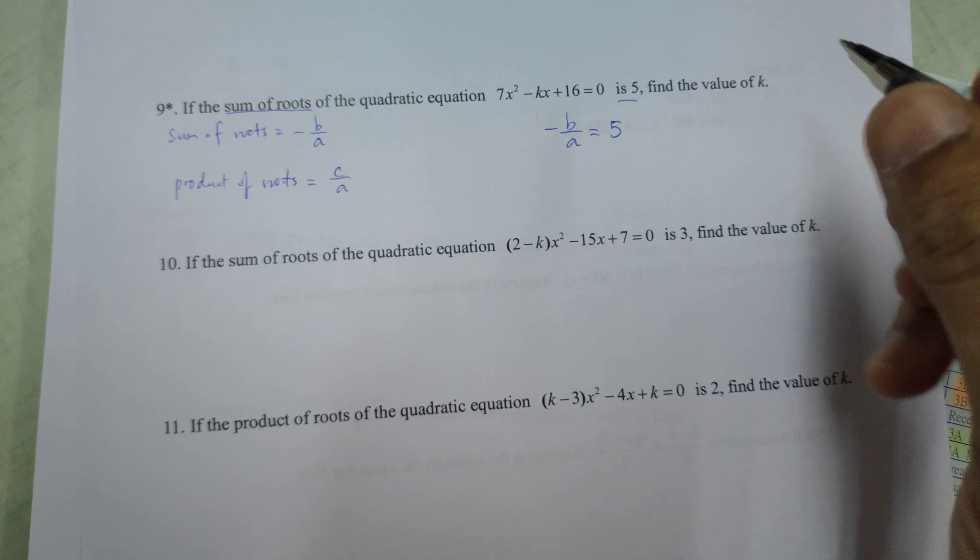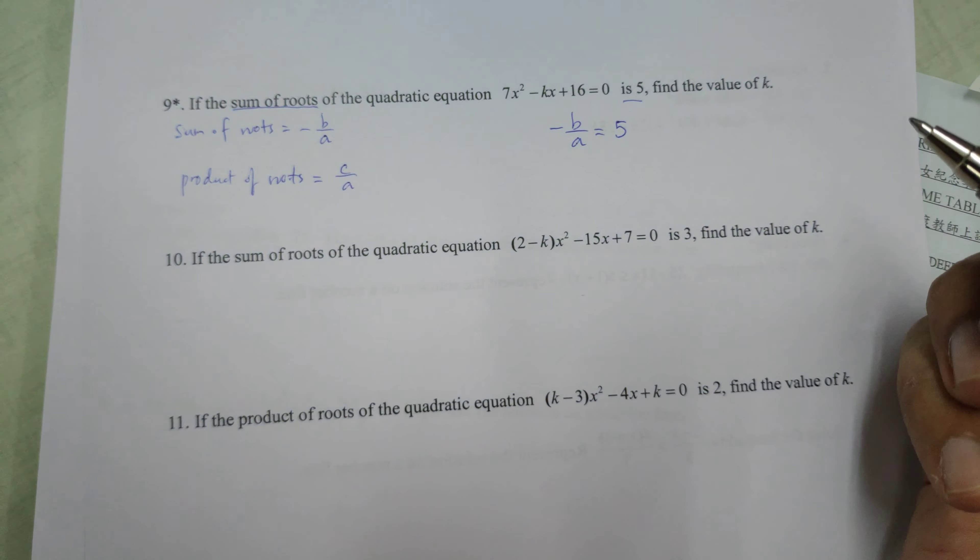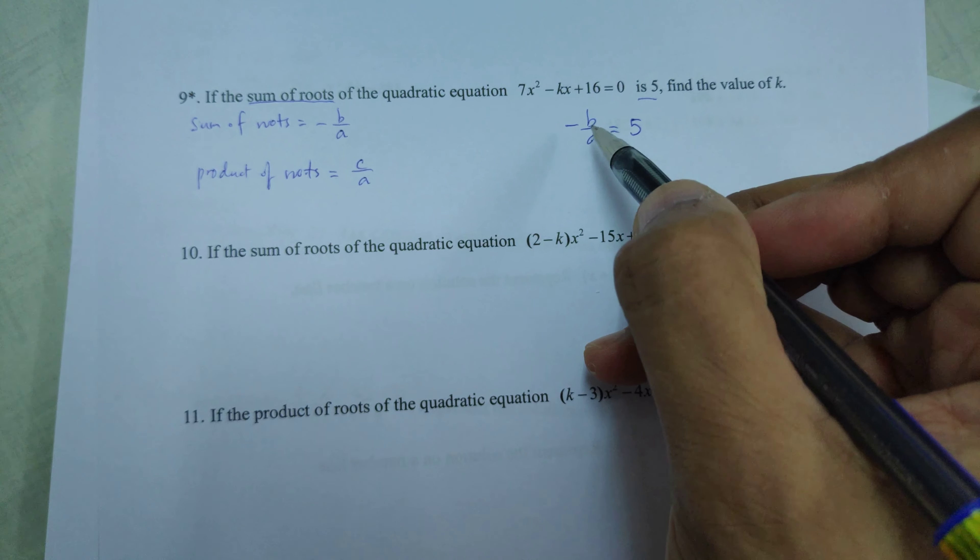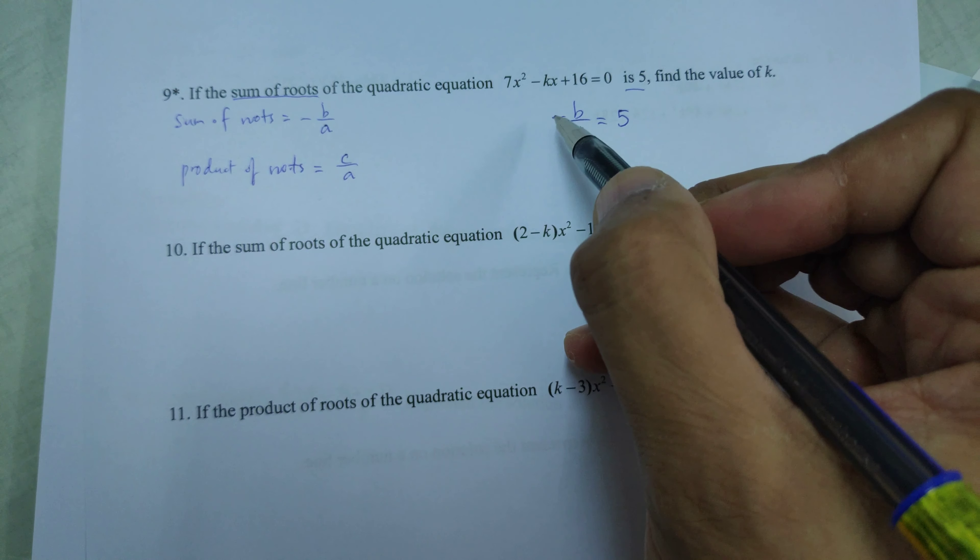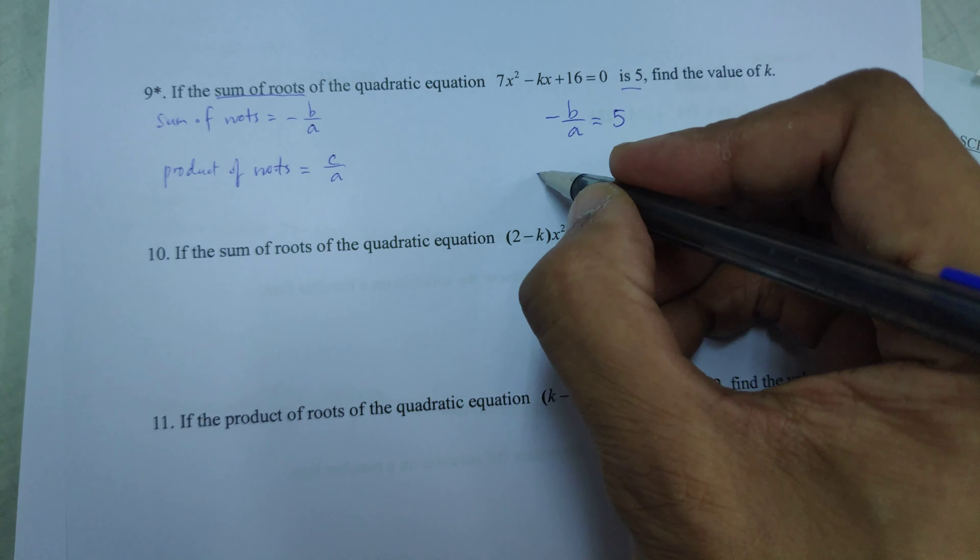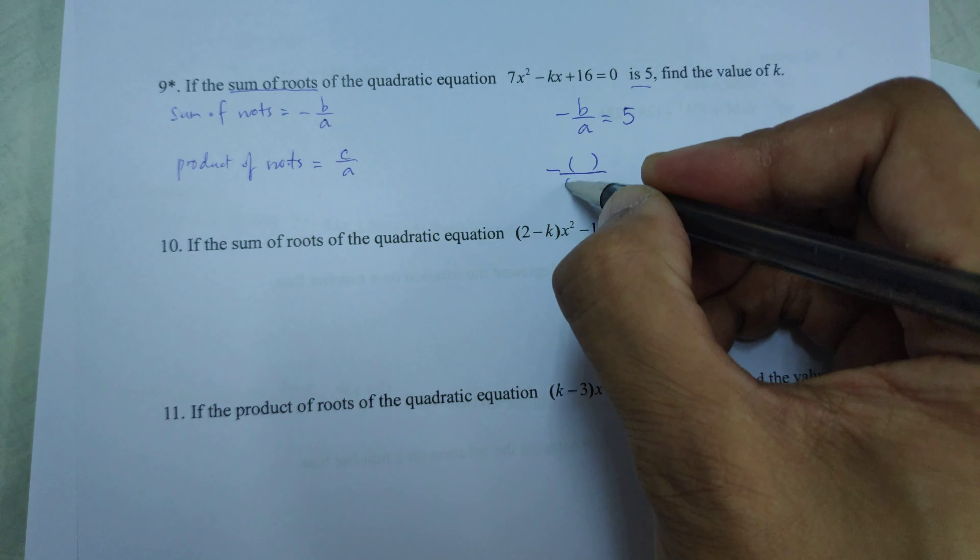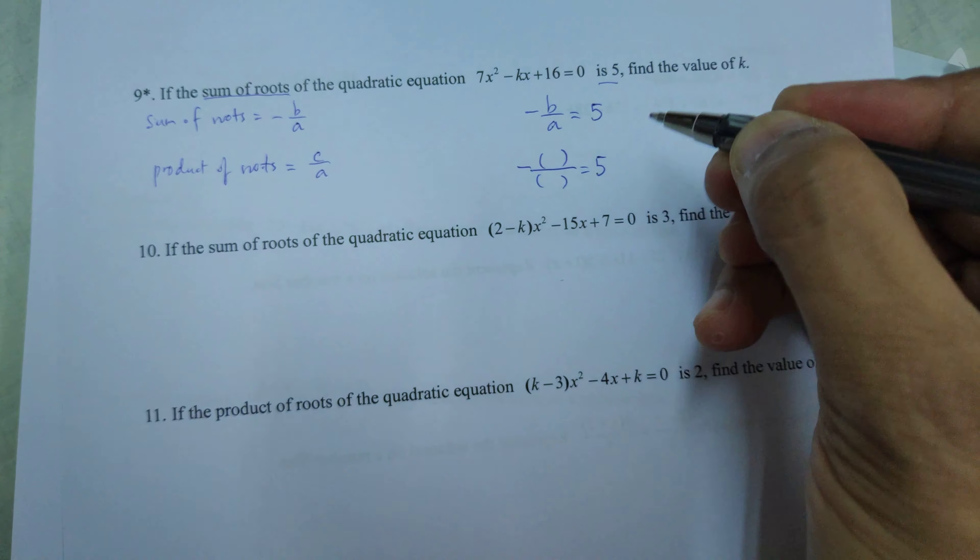All we need to do is get the values of a, b, and c, but in this case we only need to use negative b over a.